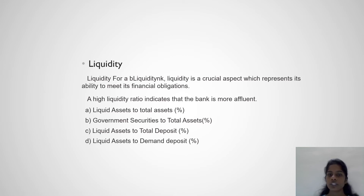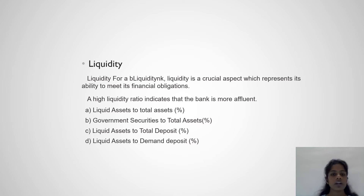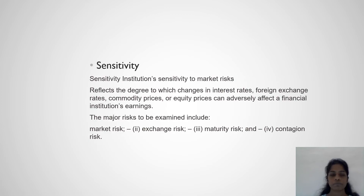Liquidity is a crucial aspect which represents a bank's ability to meet its financial obligations. A high quality ratio indicates that the bank is more affluent. Key ratios include: Liquid Asset to Total Asset, Government Securities to Total Asset, Liquid Asset to Total Deposit, and Liquid Asset to Demand Deposit.